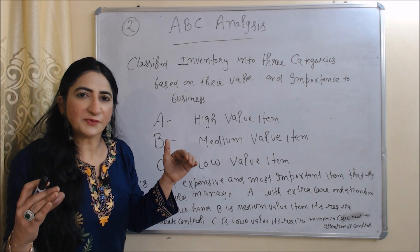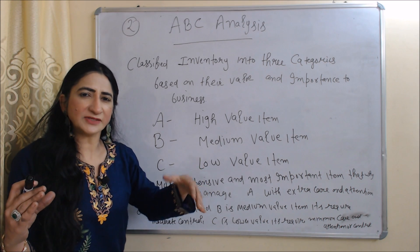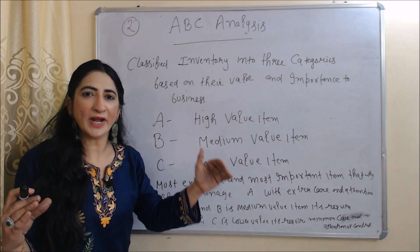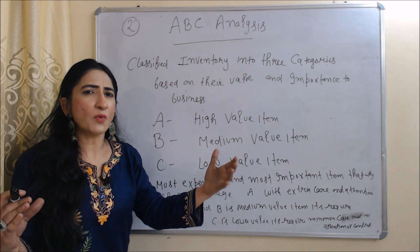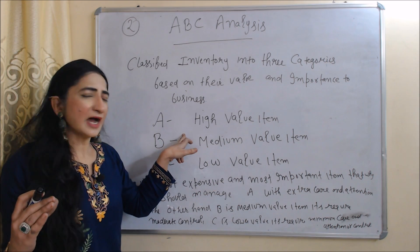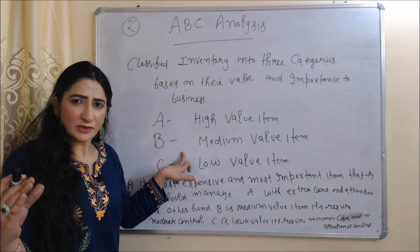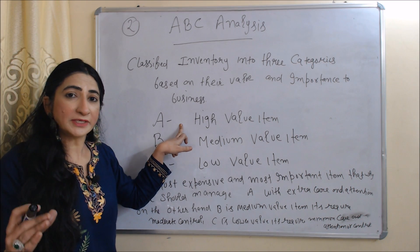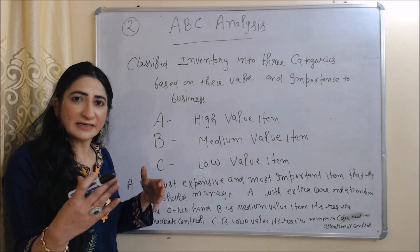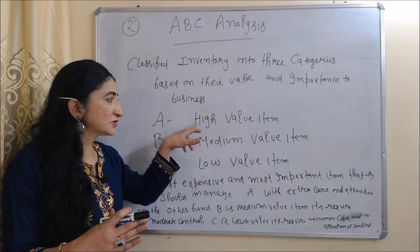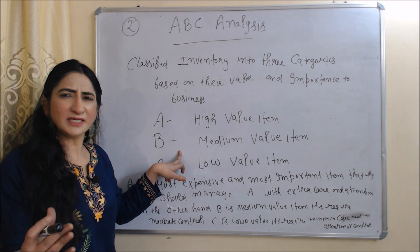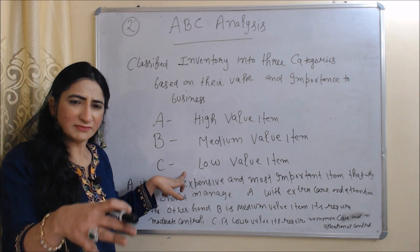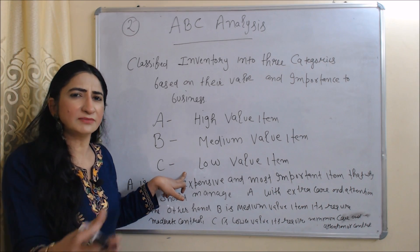The next inventory management technique is ABC analysis. This analysis classifies inventory into three categories based on their value and importance to the business: A is high value item, B is medium value item and C is low value item. A is the most expensive and most important item, so business manages it with extra care — A requires higher control. B is medium value and requires moderate control. C is low value and requires minimum care and control.